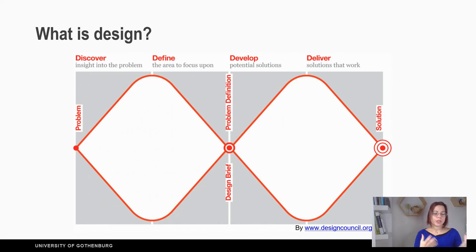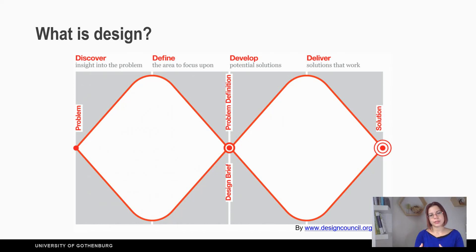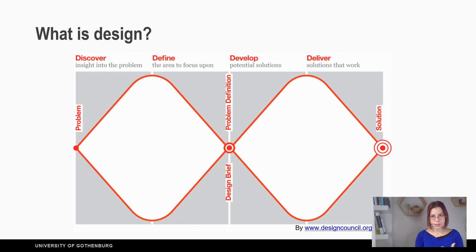Finally, you need to pick one specific problem and describe it in the design brief in order to move on to the second diamond, which consists of the phase 'Develop' — where you start prototyping solutions, evaluate them with users, and repeat the process. This leads to the next stage, 'Deliver,' where you deliver the final product. Of course, this is not a linear process; you can move between the different phases.